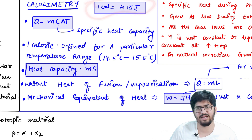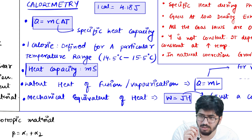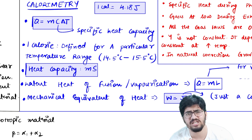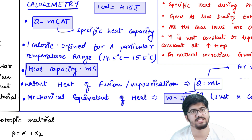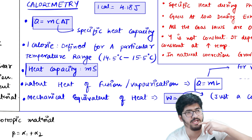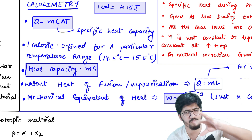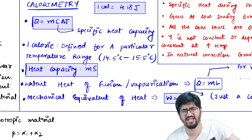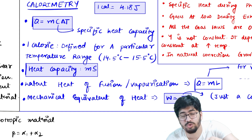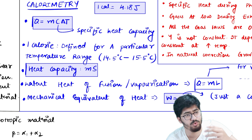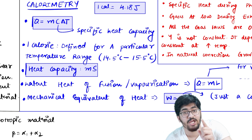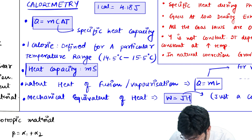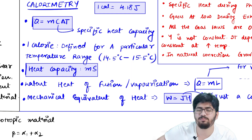This is defined for a particular temperature range. As you may have studied in Unit and Dimension, 1 meter has a specific definition. Similarly, the calorie is defined for a specific temperature range. The calorie definition is: the heat required to raise temperature from 14.5°C to 15.5°C. This is mentioned in our NCERT.